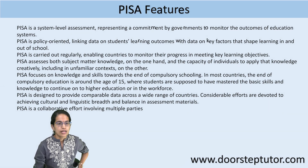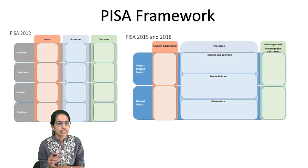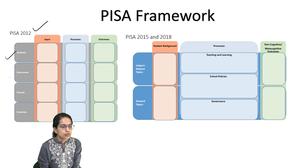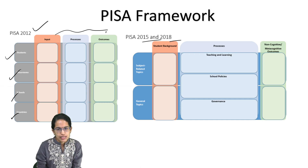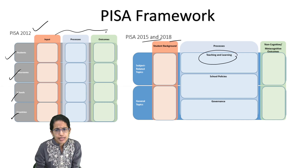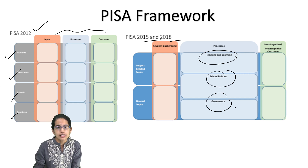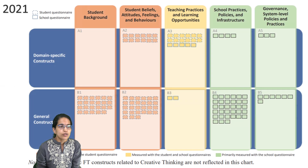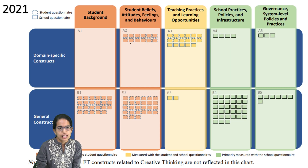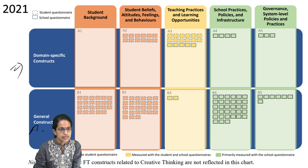The PISA framework in 2012 focused on students, classrooms, schools, and countries across three parameters: input, process, and outcomes. In 2015 and 2018, it shifted to teaching-learning policies of schools and governance, focusing on metacognitive outcomes through student subject-related and general topics. In 2021, this was further divided into domain-specific and general constructs.